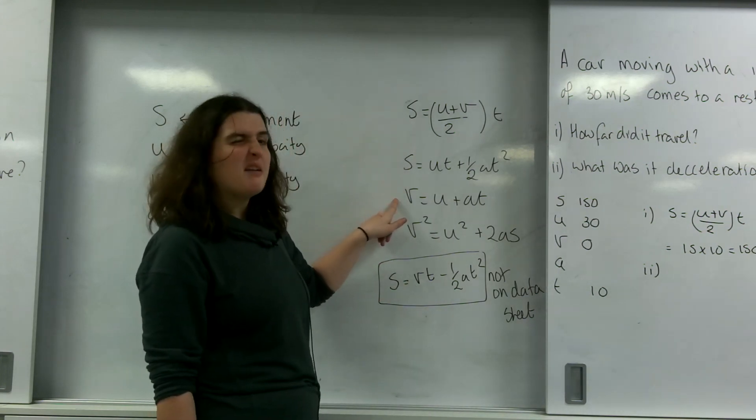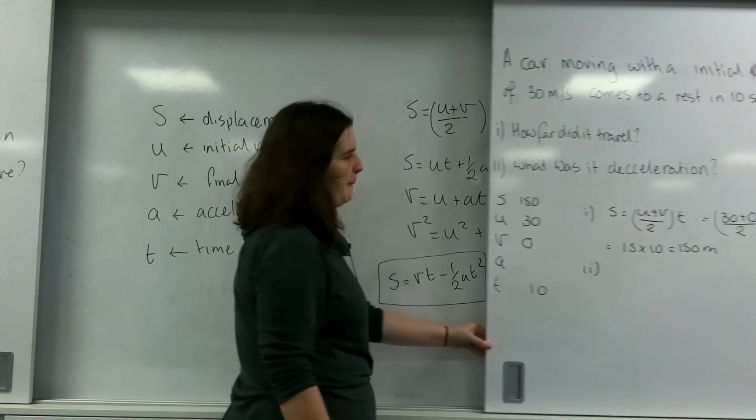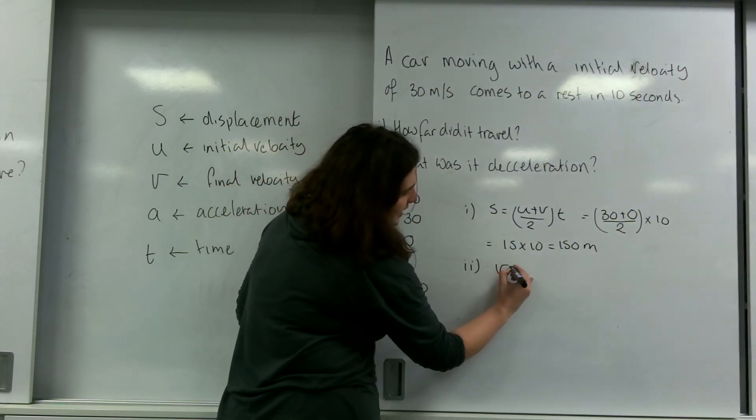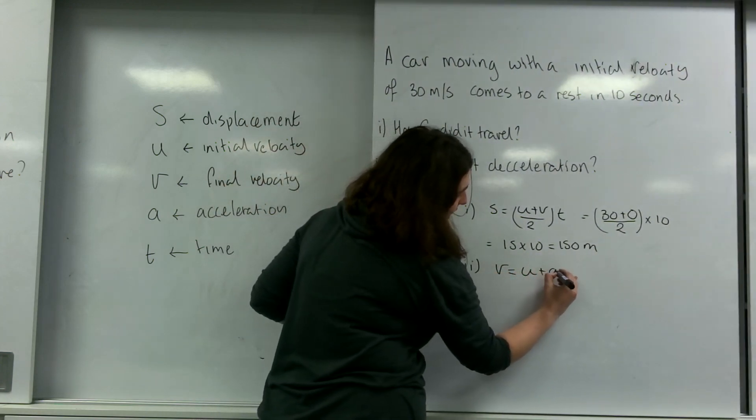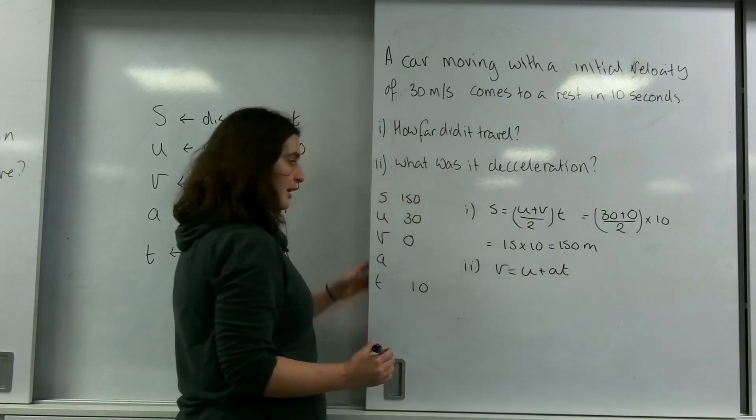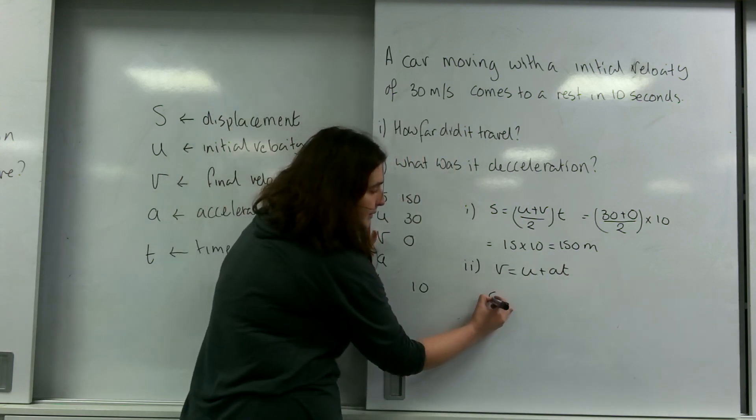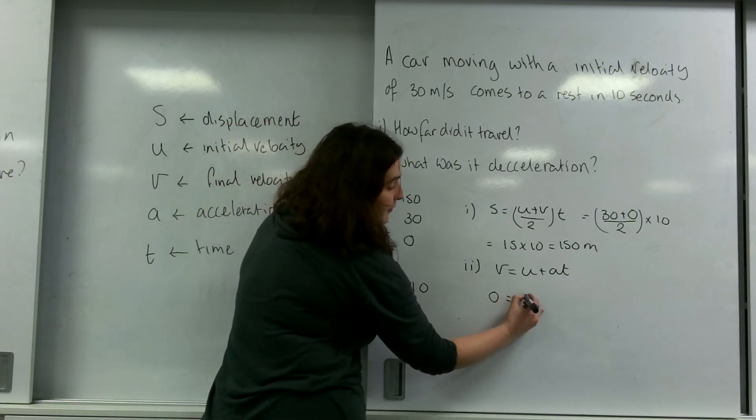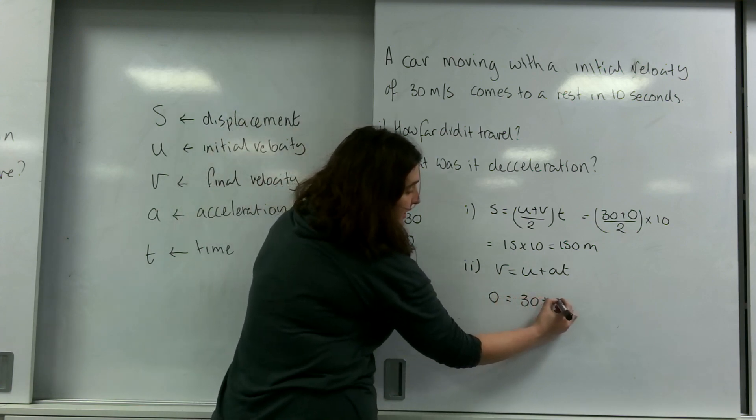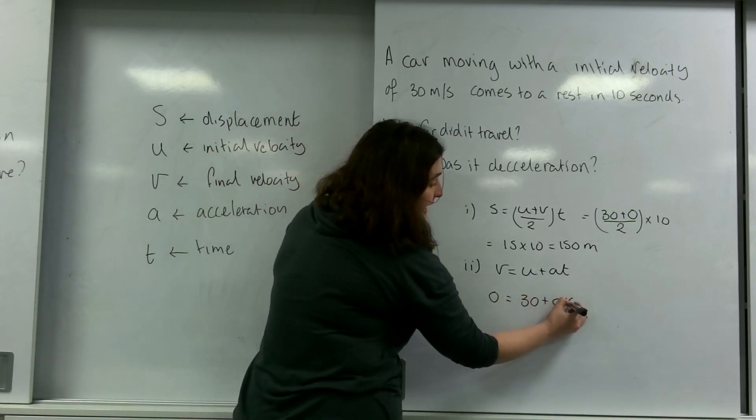So I need a simple formula that has A in it. And this one here, V equals U plus AT. So V equals U plus AT. My V is 0. My U was 30 plus A times by 10.